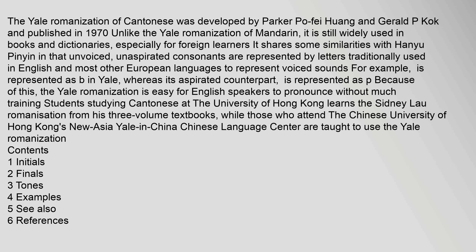For example, an unaspirated consonant is represented as B in Yale, whereas its aspirated counterpart is represented as P. Because of this, the Yale Romanization is easy for English speakers to pronounce without much training.